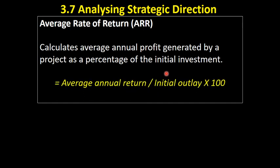There is a formula worth knowing for this one: the average annual return divided by the initial outlay, times 100. So in other words, how much profit does this project make per year — that's the average annual return — divided by the initial cost of the investment, multiplied by 100. That gives us a percentage figure for the average rate of return of that investment.